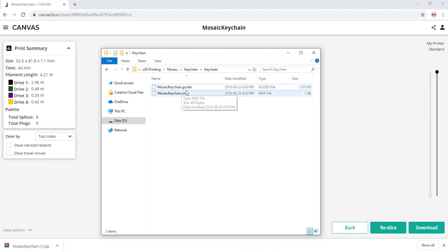As you can see, we have a print file. For this machine, it's a G-code file, and we'll use that on our printer. The second file is an MAF file, which is the file type that is used for a Palette 2 in accessory mode.